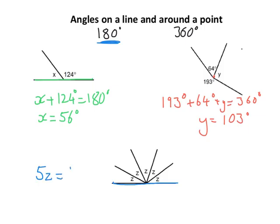Because it's on a line, I'm going to be using this one, I've got to make 180. Now I've got a little equation there, so five lots of something has got to make 180, so z has to be 36. So ultimately, these angle questions are a little bit like solving equations, depending on the situation.